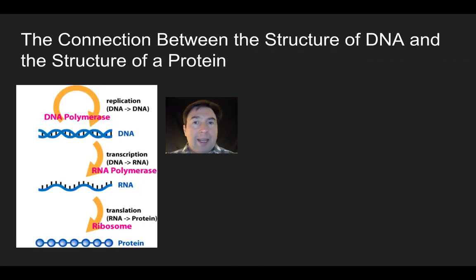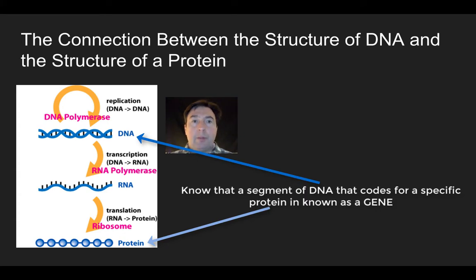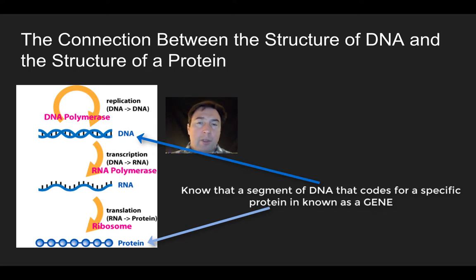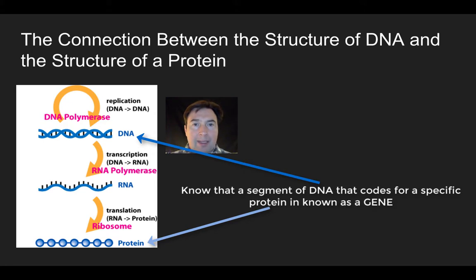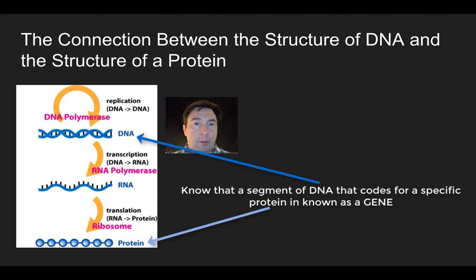When we connect the structure of DNA to the structure of a protein, it's important to know that DNA provides the template, or the instructions, for how to construct the protein. It is the sequence of bases in DNA that allows the ribosome to know what order to put the amino acids in to make the right protein. When the right series of amino acids are assembled and fold up, they form the structure of a protein.